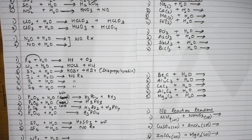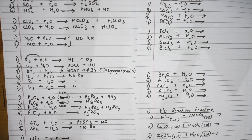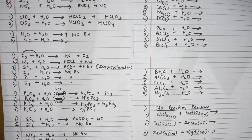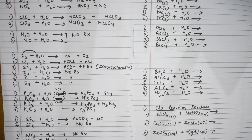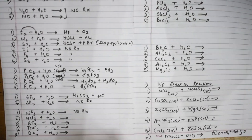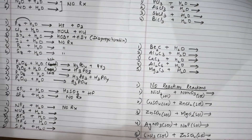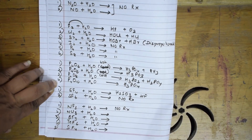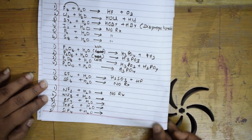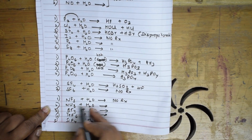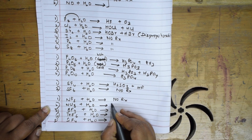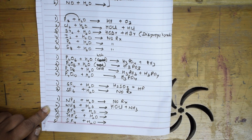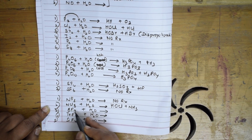One more no-reaction case: NF3 plus water — there is no reaction at all. But when NCl3 is taken, it comfortably forms HOCl and NH3. So NF3 gives no reaction, NCl3 gives HOCl and NH3.